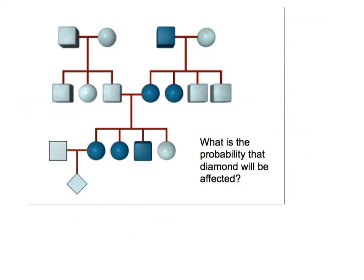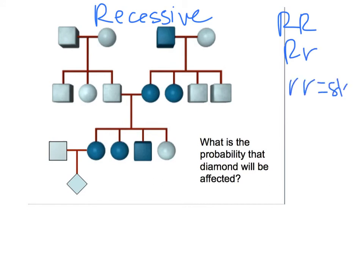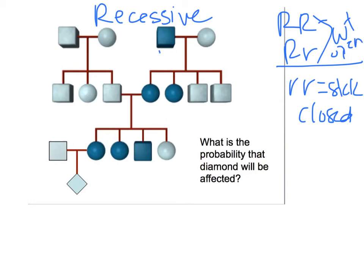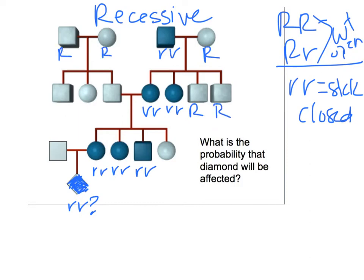Okay, are you with me? Let's do the same thing, but let's call it recessive, since this pedigree seems to work for either. Big R, big R; big R, little R; little R, little R. This one is sick or closed — these guys are both wild type, open. So what do we know? We know all of these open guys have to be little R, little R. Which means that question-mark child has to be little R, little R. Again, in order for these guys to be open they have to have at least one big R, so let's give them all at least one big R.